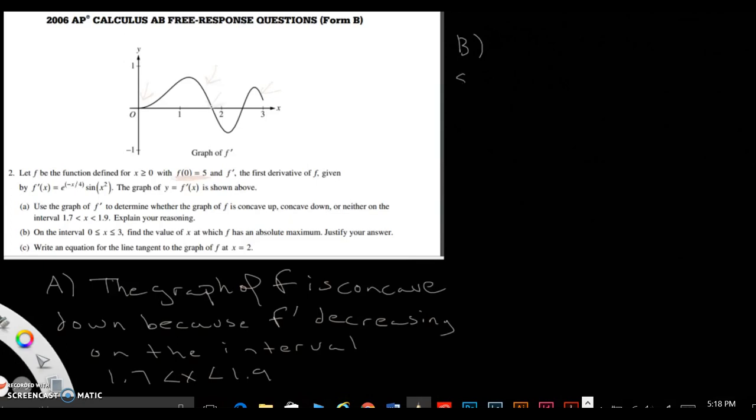So you have to solve on your calculator. So you would solve the function f prime of x. So you write e negative x divided by 4, sine x squared, equals 0, comma x on your TI-89, or whatever calculator you're using. And when you solve it, you're going to get x is roughly about 1.774. I believe that's what I got.